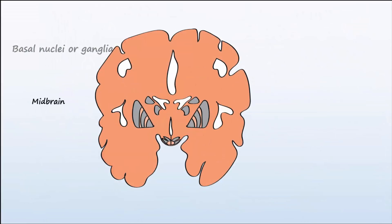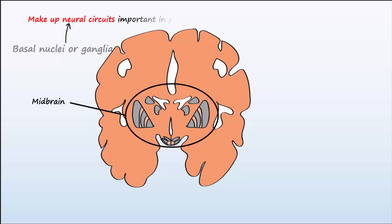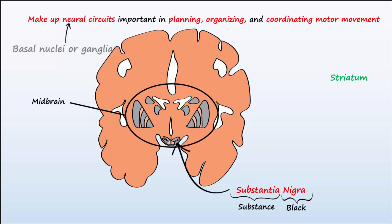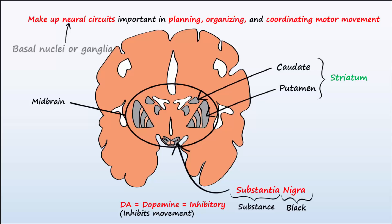Basal nuclei, or ganglia, located in the midbrain are important components of neural circuits involved in planning, organizing, and coordinating motor movements. The basal nuclei consists of the striatum and the substantia nigra. The substantia nigra literally means black substance and consists of dopamine-producing dopaminergic neurons. This dopamine has an inhibitory effect in the circuits as they project onto the striatum. The striatum is composed of several nuclei including the caudate and putamen, and consists mainly of cholinergic neurons that produce acetylcholine, which acts as an excitatory neurotransmitter in these motor circuits to instigate movement.